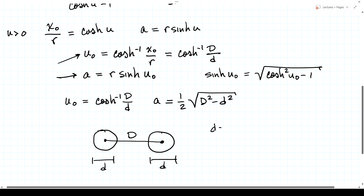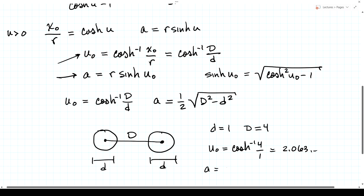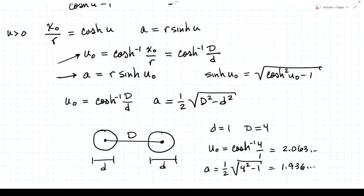As an example, suppose we want cylinders of radius 1 with center-to-center separation 4. Then u₀ = cosh⁻¹(4/1) ≈ 2.063, and the scale factor a = (1/2)√(4² − 1²) = (1/2)√15 ≈ 1.936. That sets up our boundaries — the surfaces of the two cylinders — and now we need to solve the Helmholtz equation in this coordinate system.